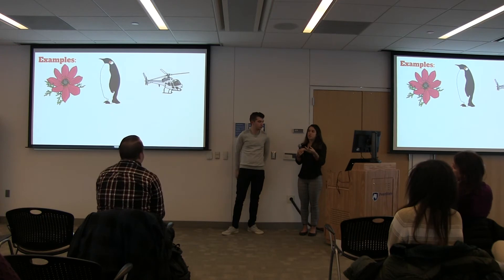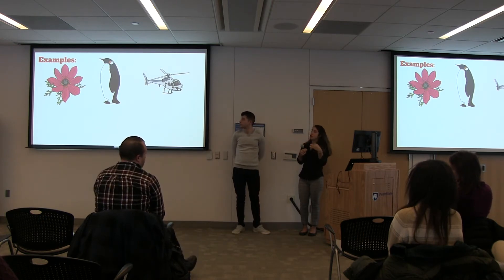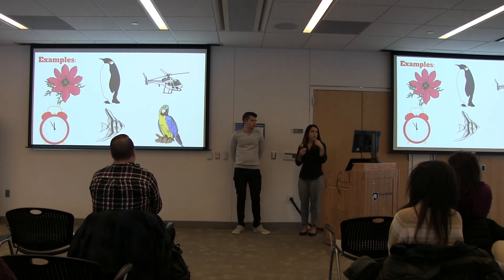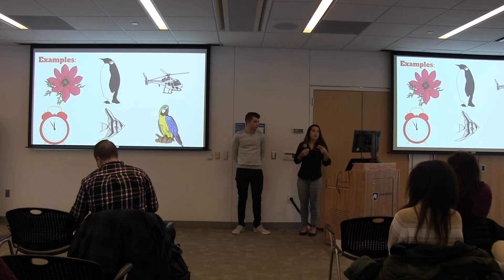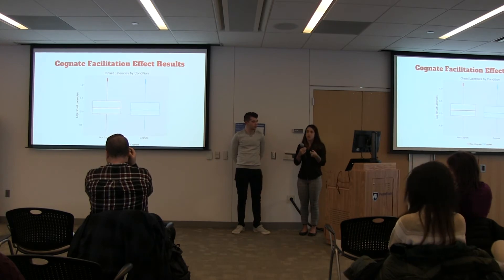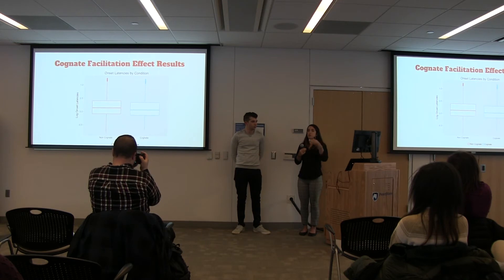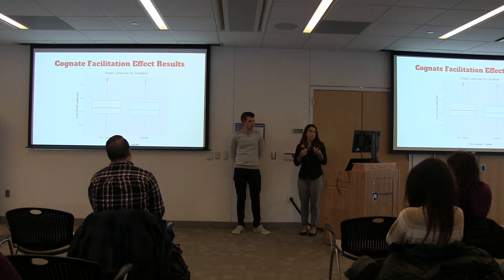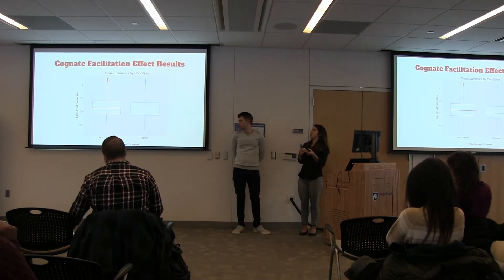These are some examples of the pictures we showed our participants. The first three pictures are cognates — in English, 'flower' would be 'flor' and 'penguin' would be 'pingüino.' The bottom three are non-cognates — for example, 'clock' would be 'reloj' or 'fish' would be 'pez.' Looking at the results, on the y-axis you see the response times. The left box shows response times for non-cognate words, and the right box shows response times for cognate words. The lines in the middle of each box represent the median response time. As we can see, they showed the cognate facilitation effect — they are identifying cognates faster than non-cognates.